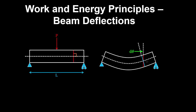Recall that for an Euler-Bernoulli beam, the sagging moment makes the section that is initially perpendicular to the neutral axis rotate along with the neutral axis, and that section stays perpendicular to the neutral axis before and after deformation.